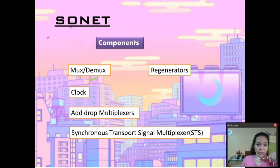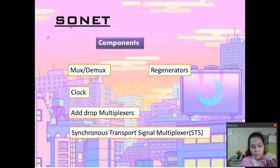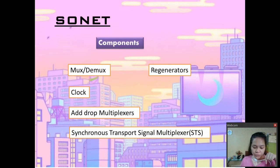We have here our components: the MUX, DMUX, the clock, ADRAC multiplexors, and the Synchronous Transport Signal multiplexor or STS. The STS is a multiplexor connected to the clock, so STS has both a multiplexor and demultiplexor. MUX is used for the input and DMUX is used for the output. Regenerators are used to remove noise and amplify the signal. They are bidirectional and used at the data link layer.